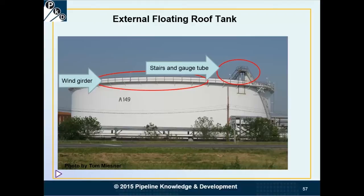Here's a closer view of an external floating roof. Since the shell is open on top, we put a horizontal piece of steel around the top to stiffen it up so that wind won't induce vortex-induced vibration (VIV) — causing it to shake and create operating problems or fatigue. I've also pointed out the stairs and gauge tube. The gauge tube goes down into the tank; that's how we know how much fluid is in the tank. Whenever these tanks are built, someone measures them with a tape measure and produces tank tables that tell us, at each specific height in the tank, the volume in the tank.